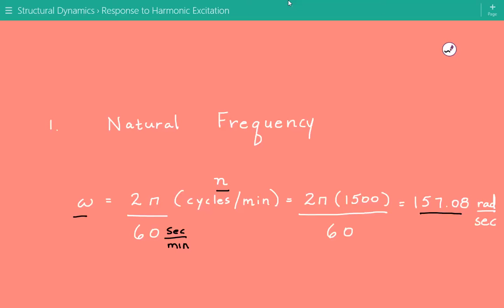So we have 2π times 1500 cycles per minute divided by 60 seconds per minute and the circular natural frequency is equal to 157.08 radians per second.